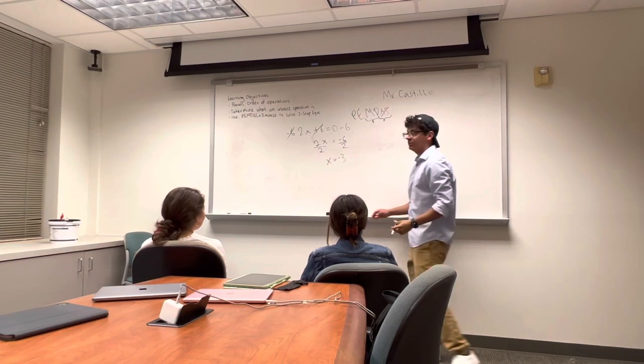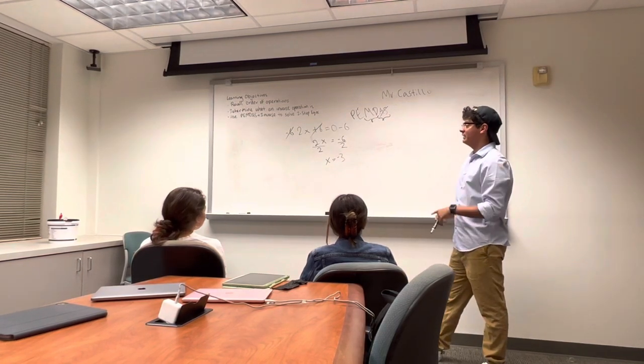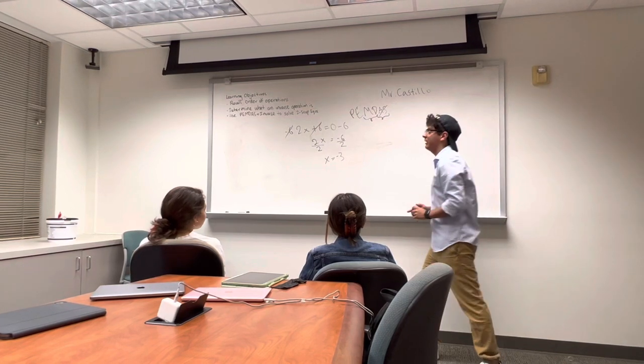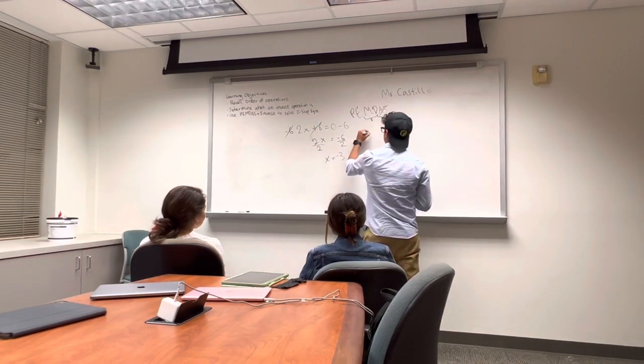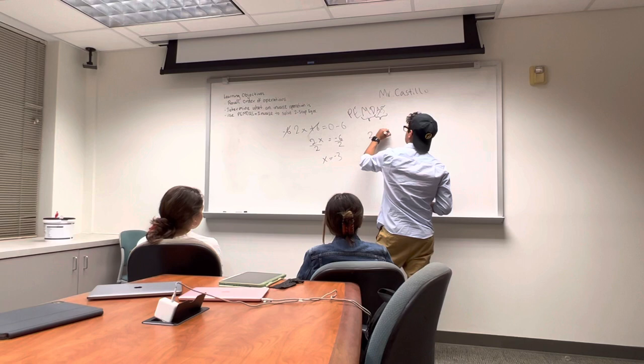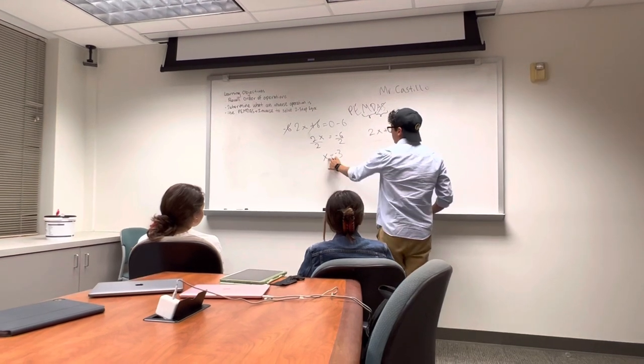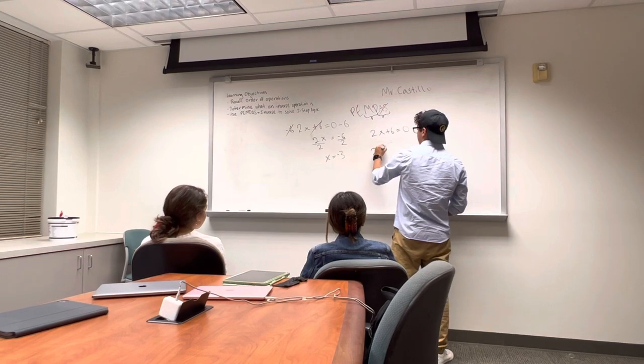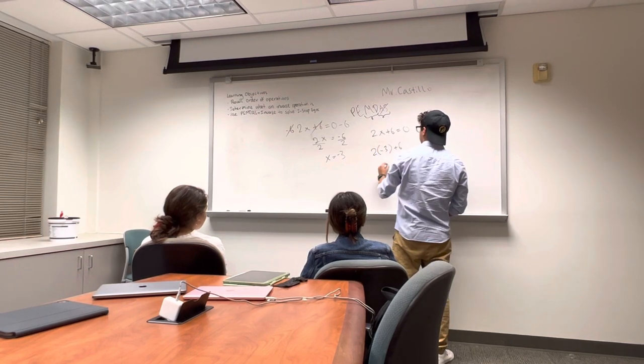The next step is to plug in your answer into the original equation to make sure that you have the right answer. So we look back at the original equation, 2x plus 6 is equal to 0. If we plug in this negative 3 into here, we have 2 times negative 3 plus 6 is equal to 0.